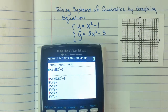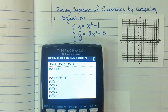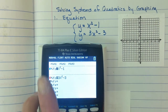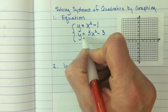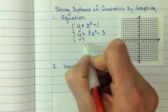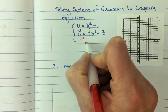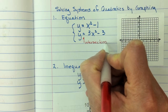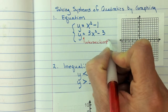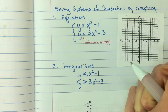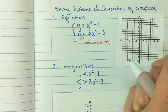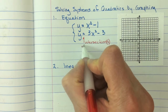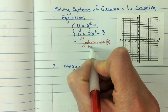I just want you to notice that these are equals. And because they're equals, we're only going to be looking for intersections. These equals signs mean we're looking for the intersection — sometimes there's one, sometimes there's two, sometimes there's none of the functions.